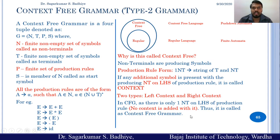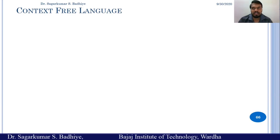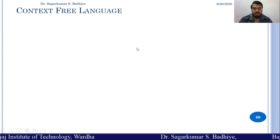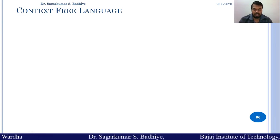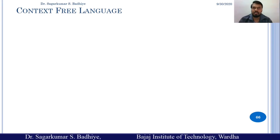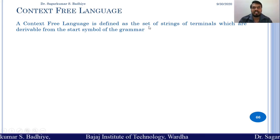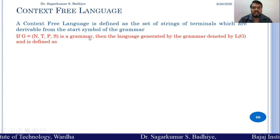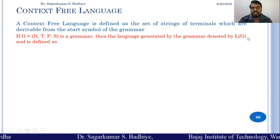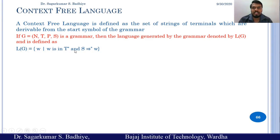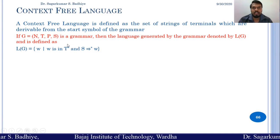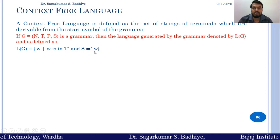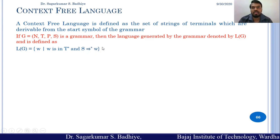A context free language is the language defined by a context free grammar. It is the set of all strings of terminals generated from the production rules of the grammar, starting from the start symbol. If G = (N, T, P, S) is a grammar, then the language generated is denoted L(G), defined as: L(G) = {w | w ∈ T* and S derives to w on one or more derivation steps}.